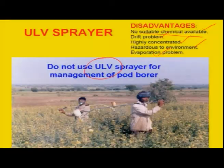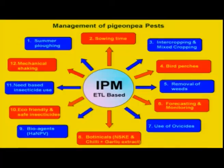Considering all these IPM components from 1 to 12, if adopted, certainly the production and productivity of red gram yield can be increased with maximum net profit.